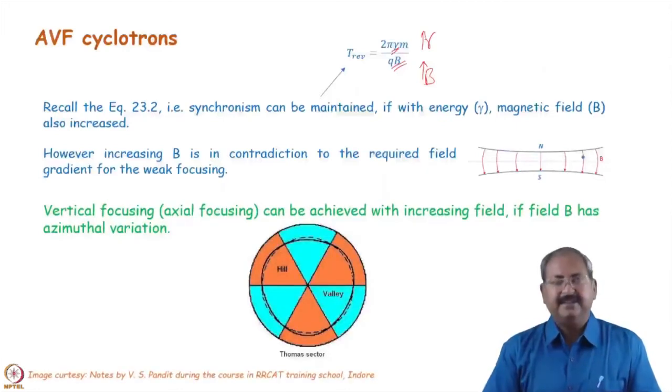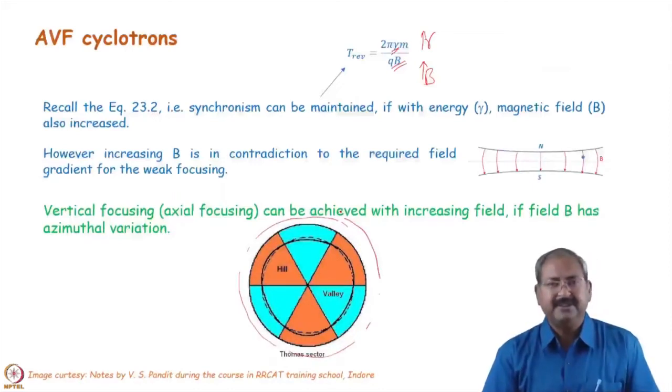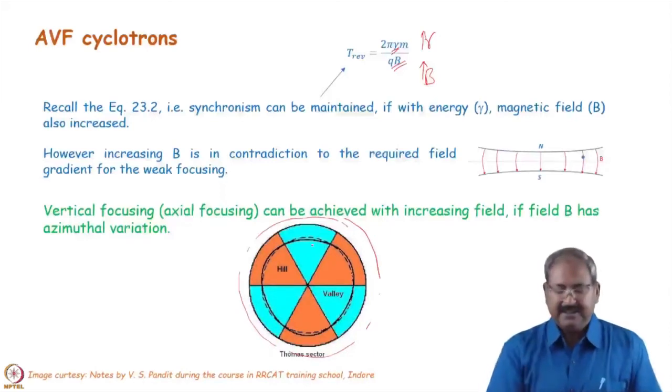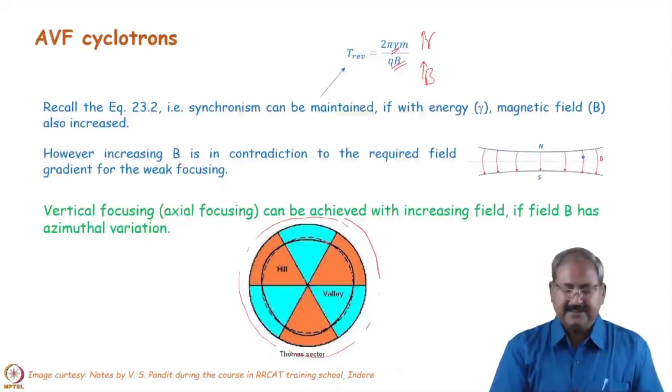This can be obtained using such configuration. Here, instead of introducing the gradient, field is variant azimuthally. Azimuthally means in this direction, the field is variant.